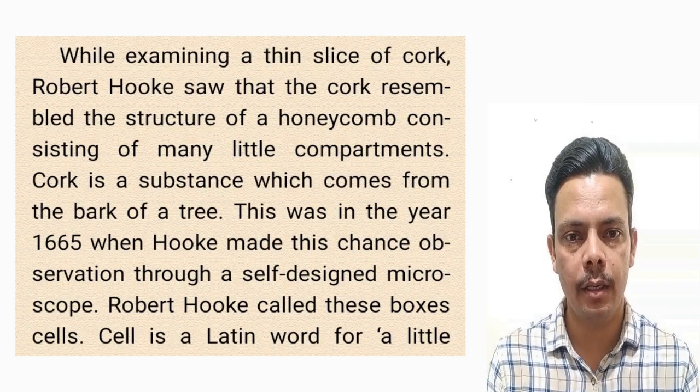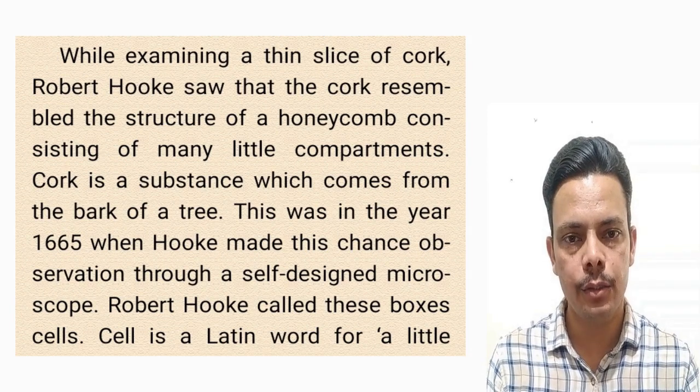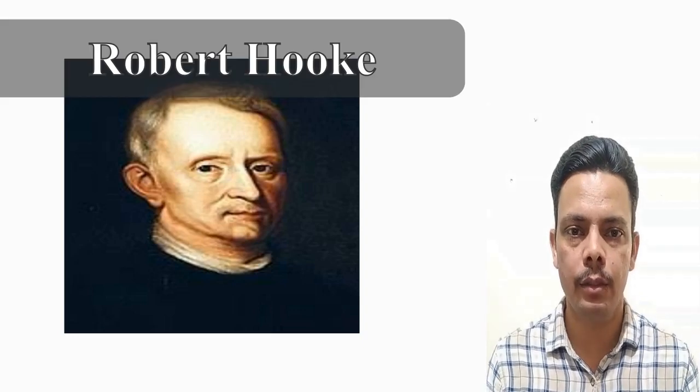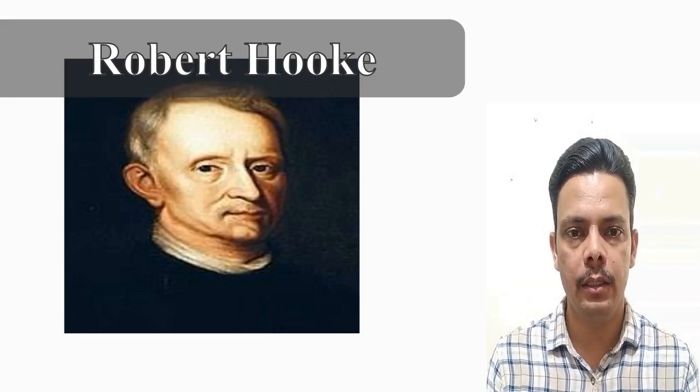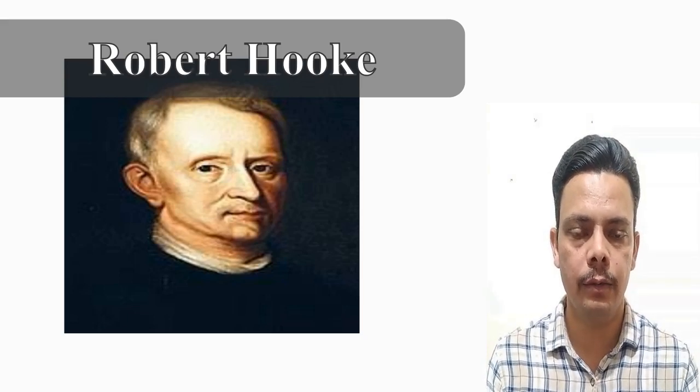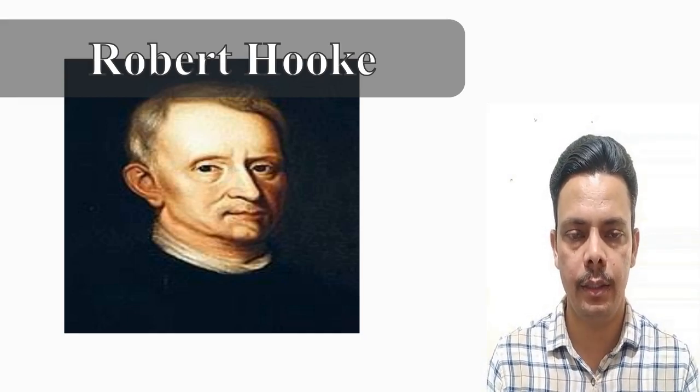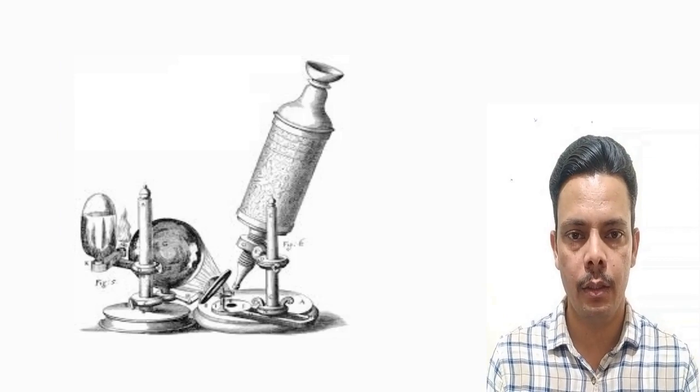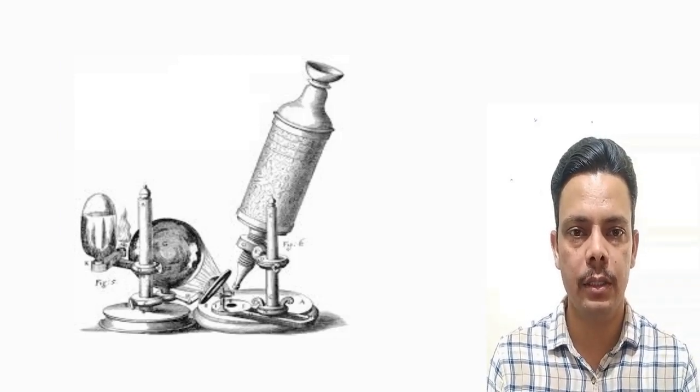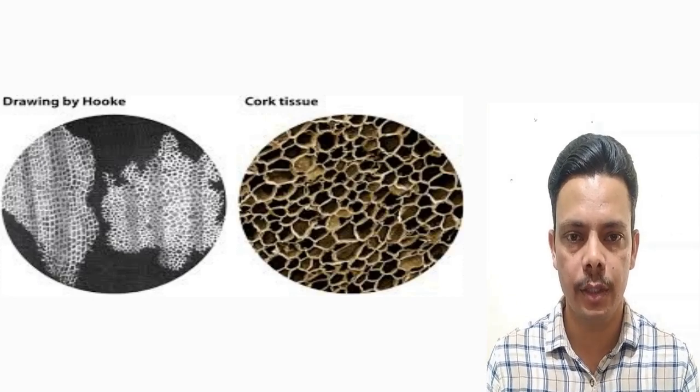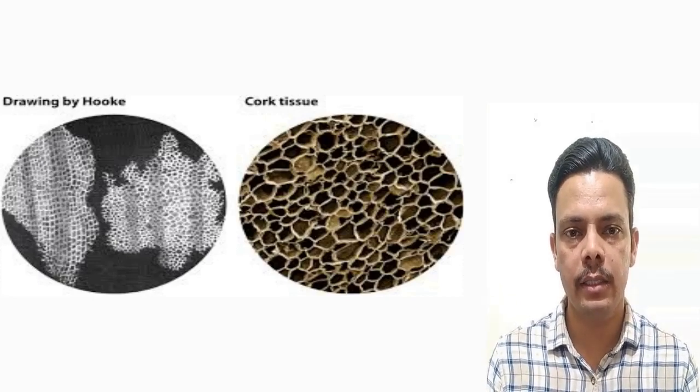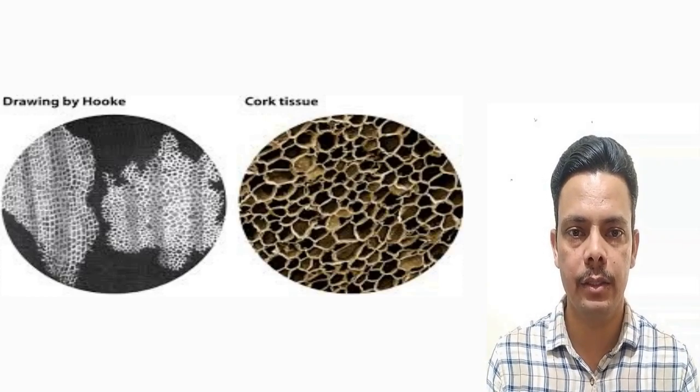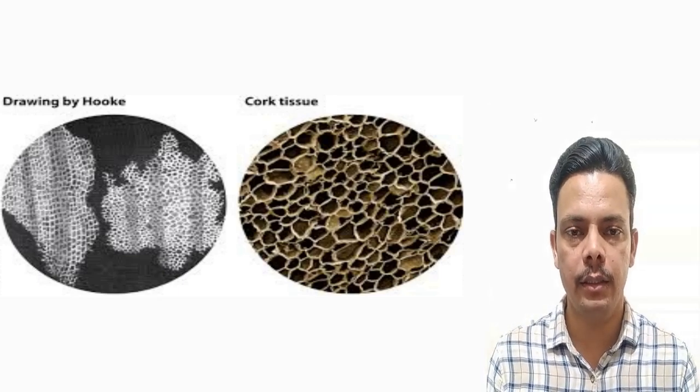This is the first paragraph of the chapter, all about the discovery of the cell. There was a scientist, Robert Hooke. He observed the bark of a tree, we call it cork, under his self-designed microscope. What he found was a structure that looked like apartments. In Latin language, an apartment means a cell, and from that the term cell was given.